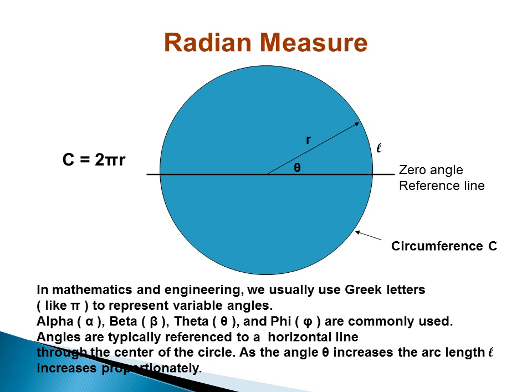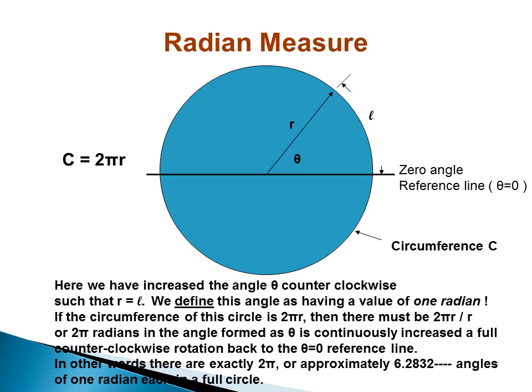We usually use a counterclockwise rotation of the radius. Here we have increased the angle theta counterclockwise such that l is equal to r. We define this angle as having a value of one radian. If the circumference of this circle is 2 pi r, then there must be 2 pi r divided by r, or 2 pi radians, as theta is continually increased to a full counterclockwise rotation. In other words, there are exactly 2 pi, or approximately 6.2832, angles of one radian each in a full circle.